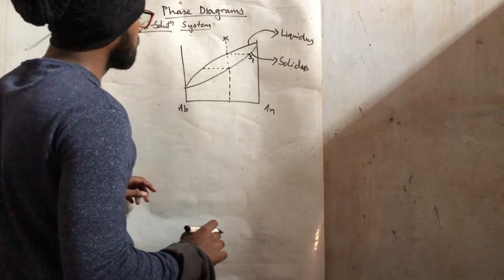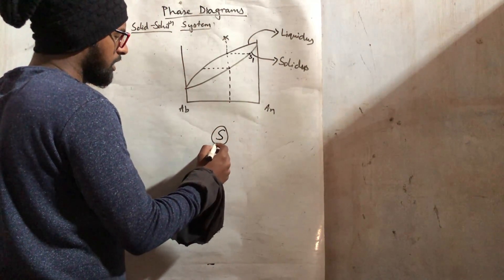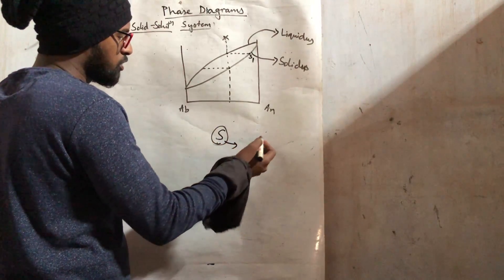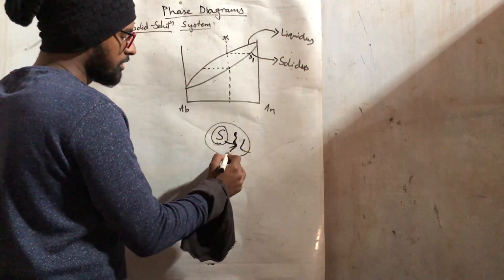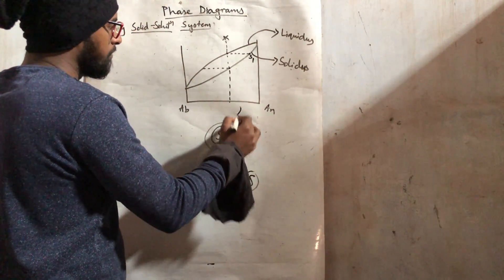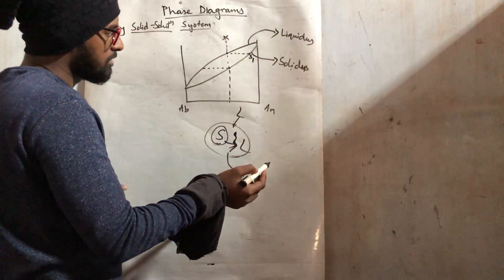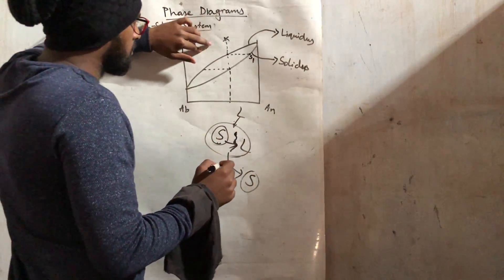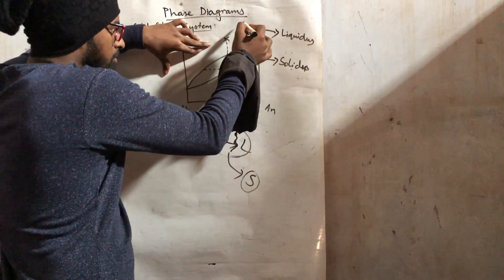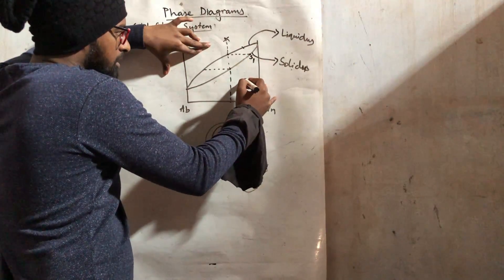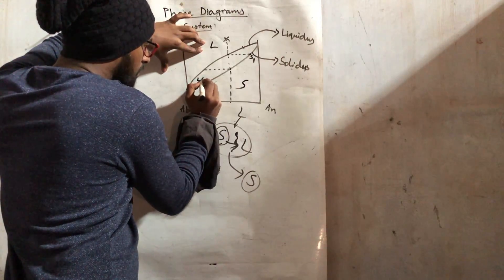Now coming to the binary solid solution system. Solid solution system means the solid that crystallizes from the melt will coexist with the liquid until that entire liquid is converted to solid. This is the liquidus and this is the solidus. Above this line everything is liquid and under this line everything is solid. Between these lines it will be liquid plus solid.